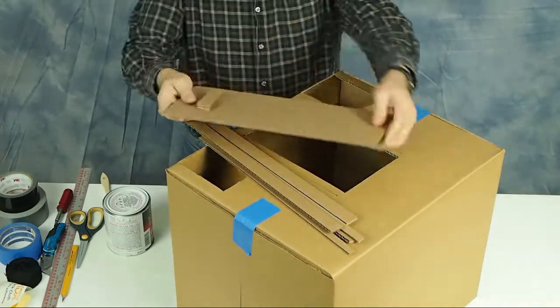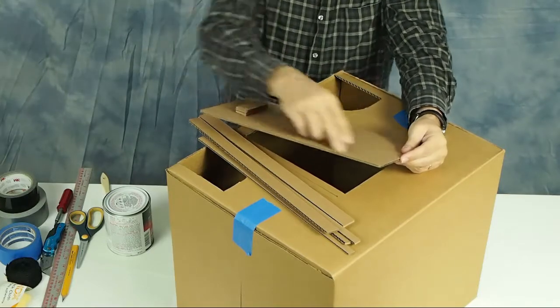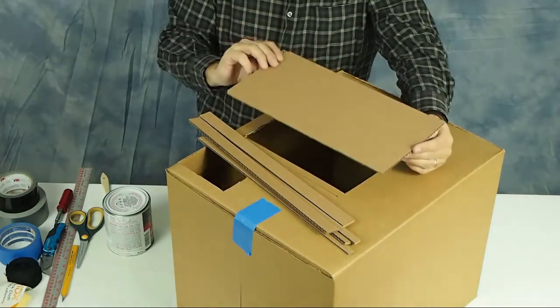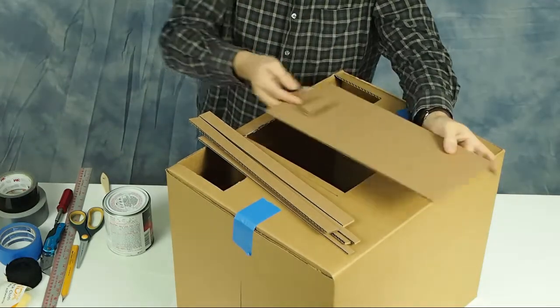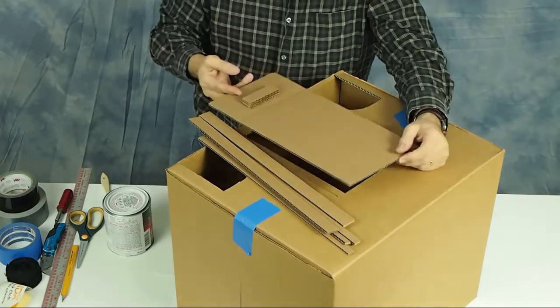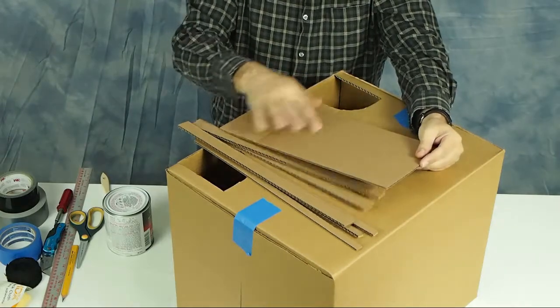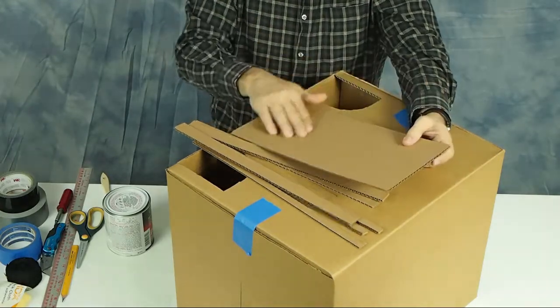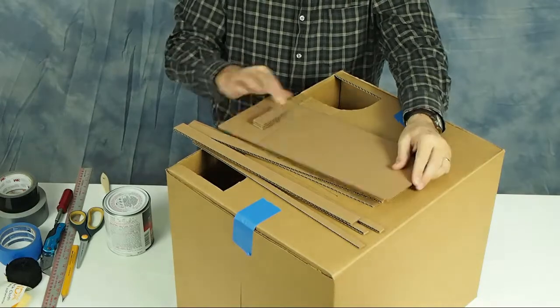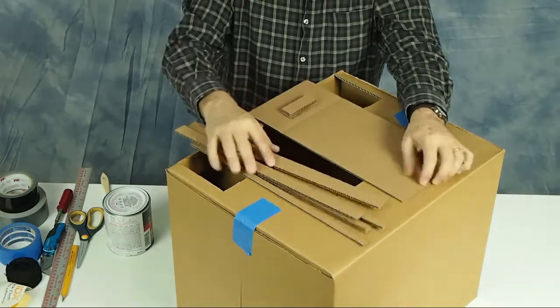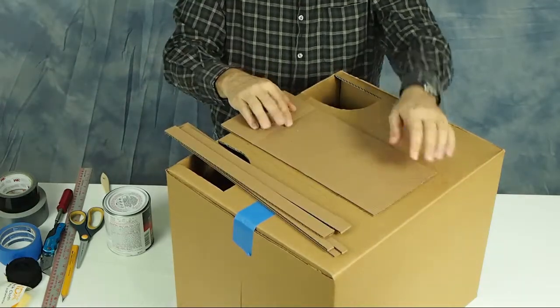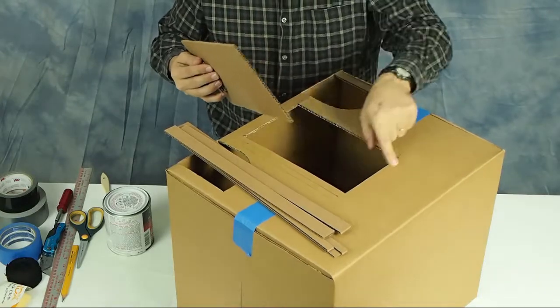The door we cut lengthwise or parallel to the corrugations, and that lets it slide back and forth better. The other thing to notice: if you look at your cardboard, one side is probably going to be wavy and the other side is going to be nice and smooth. You want that smooth side against the box so you'll get a better seal with the light seals that we're going to put in here.